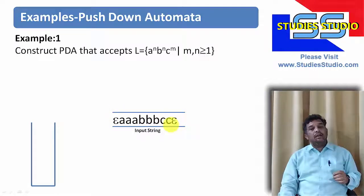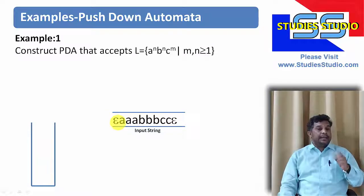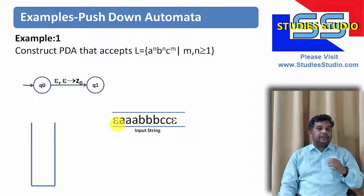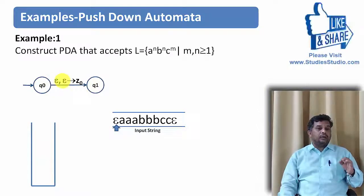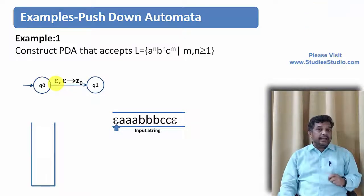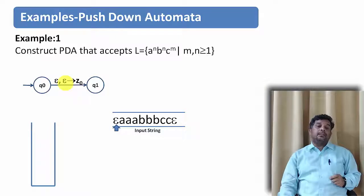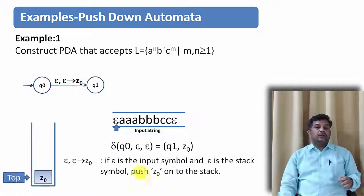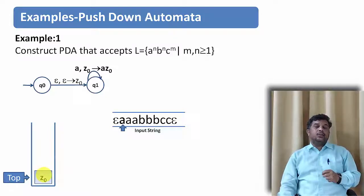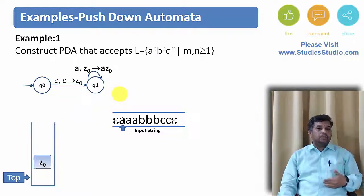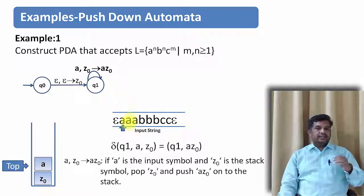To implement this, since the number of a's and b's must be the same, we need a counter — for that we need a stack. Every time an a appears, we push it onto the stack; for every b, we pop a single a. When all a's are popped and no more symbols remain, the string is accepted. We begin with epsilon, going from state q0 to q1, with the arc labeled epsilon, epsilon → Z0.